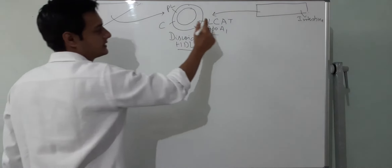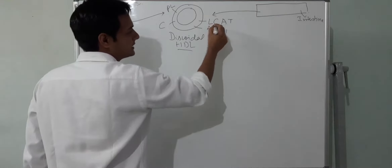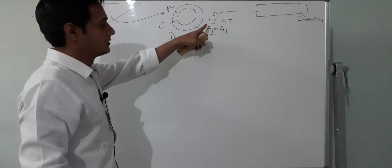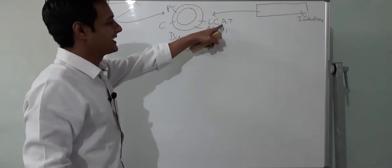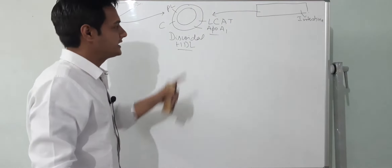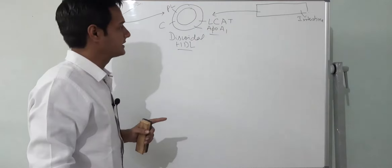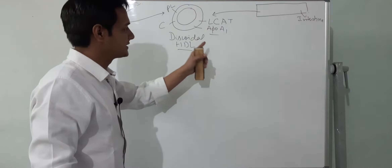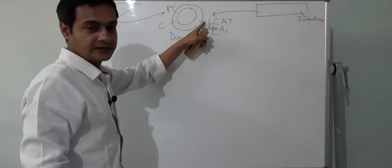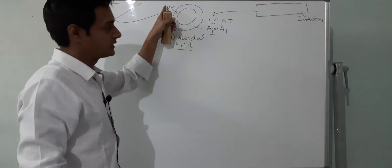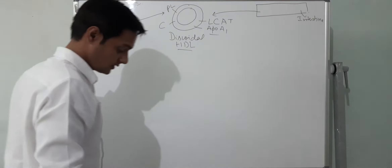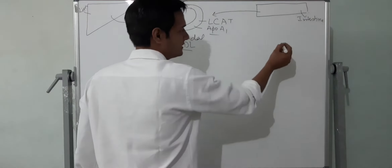Discoidal HDL contains phospholipids, cholesterol, and an enzyme known as LCAT, and its activator apolipoprotein A1. LCAT stands for lecithin cholesterol acyl transferase. The name itself suggests that this enzyme will transfer an acyl group from lecithin, which is a phospholipid, to cholesterol.